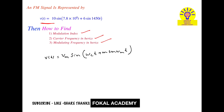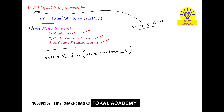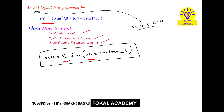Whenever message signal m(t) and carrier signal c(t) undergo FM modulation, the result is this standard form of the FM signal. Here, Vm is the message signal amplitude, ωc is the carrier signal angular frequency, m is the modulation index, and ωm is the angular message frequency.